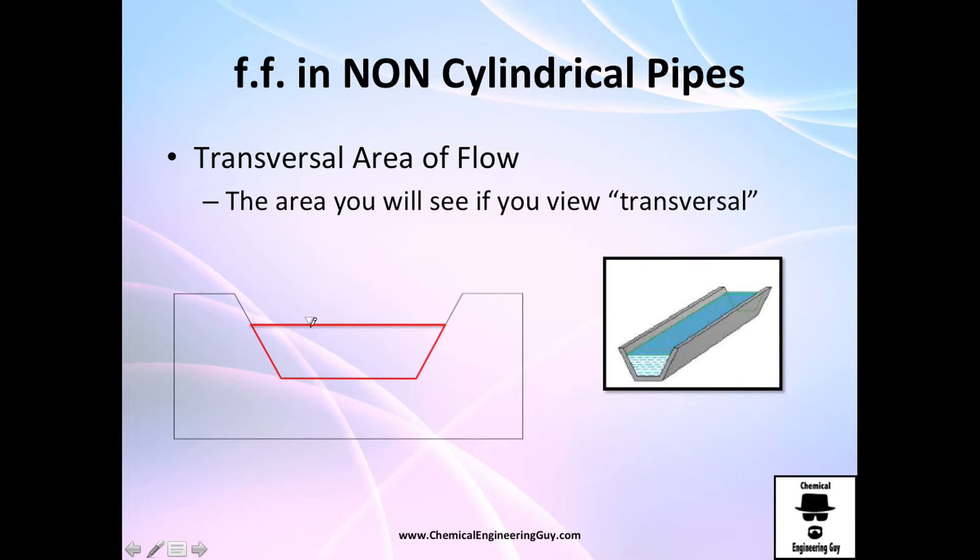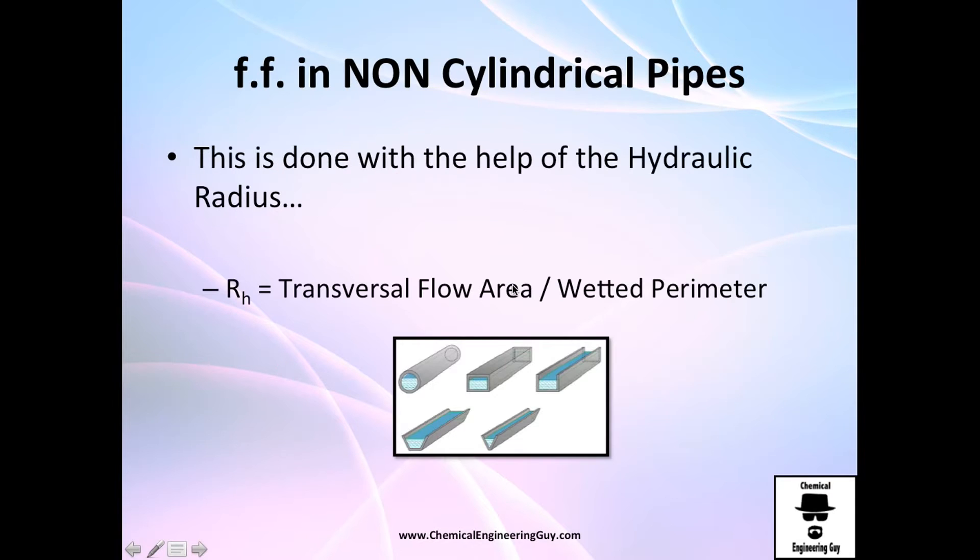Let me give you another example. For transversal area, oh sorry, we're going to transversal area, but let me go back. The wetted perimeter, I'm going to show you all these figures what is the wetted perimeter. So, as you can see, the wetted perimeter is always less than the actual perimeter of flow.